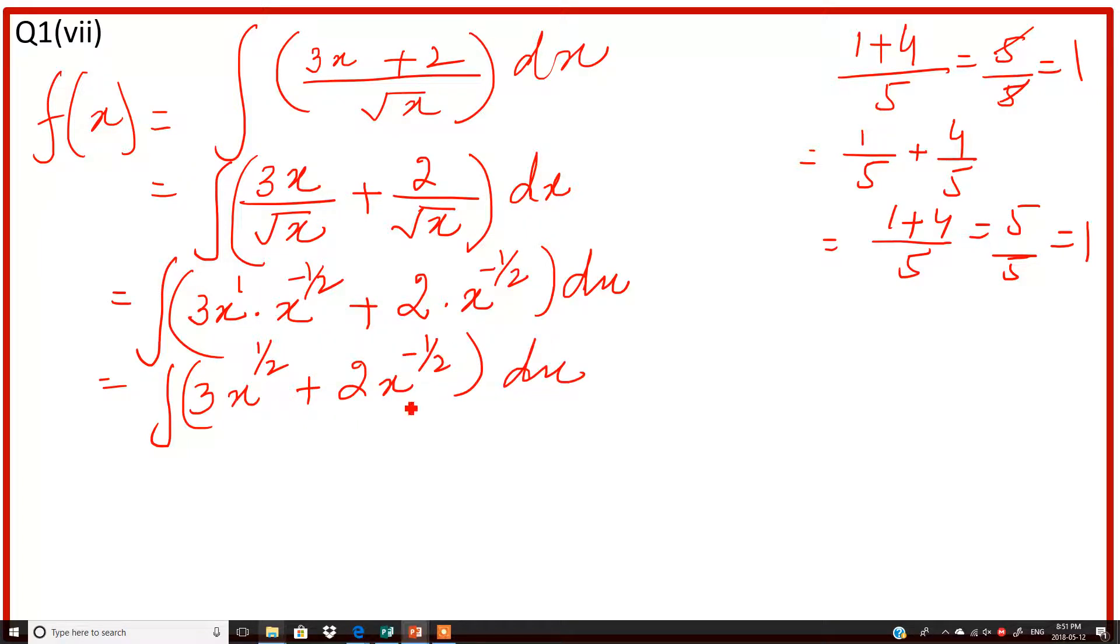Now we have two terms and both terms have constants. If you have a constant you have to write it outside the integral sign. So 3 integral x raised to power 1 by 2 dx plus 2 integral x raised to power minus 1 over 2 dx.